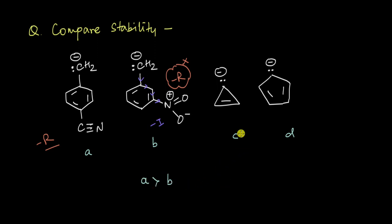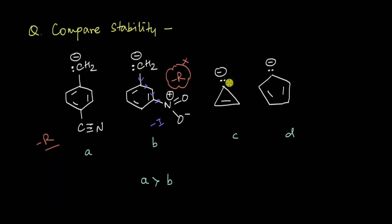Now let's look at C. C is cyclic and it's planar, and as you can see, this lone pair can also get involved in resonance. So this is a cyclic, planar and fully conjugated system, and in such systems we should be careful about aromaticity and anti-aromaticity. Now if we count the total number of pi electrons getting delocalized, we have two electrons from the pi bond and this lone pair will also get converted into pi electrons — so we have a total of 4 pi electrons getting delocalized. Because this is a multiple of 4, this system will be anti-aromatic.